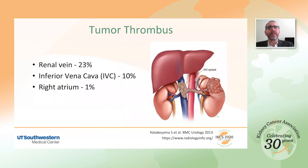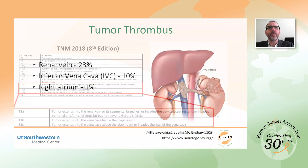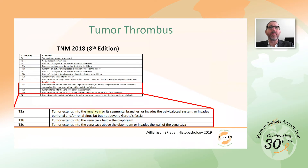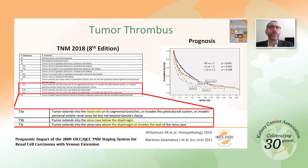Renal cell carcinoma has a predilection for extending outside the kidney via the venous system. It has been reported that up to 23% of renal cancers develop tumor thrombus in the renal vein, 10% reach the inferior vena cava, and 1% reach the right atrium of the heart. In the TNM staging system, tumors with renal vein thrombus receive T3a; tumors with thrombus reaching the IVC below the diaphragm receive T3b; and tumors with thrombus above the diaphragm or invading the IVC wall receive T3c. Prospective data indicate that higher-stage tumor thrombus carries a worse prognosis.